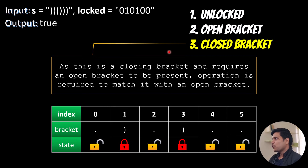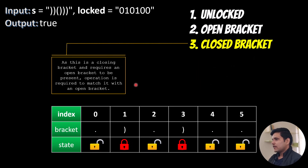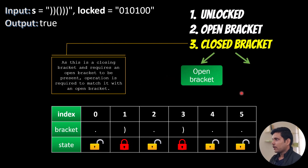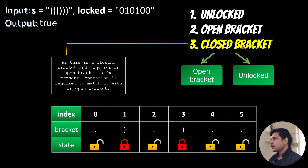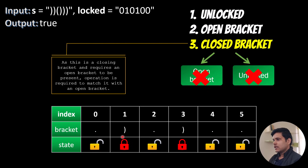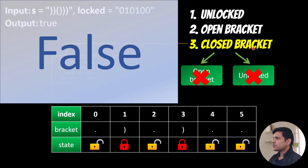Our whole attention should be on the closed bracket. Any closed bracket can be matched either via a locked open bracket or via an unlocked bracket, since an unlocked bracket can act as either open or closed. If we find no open or unlocked bracket before a closed bracket - for example, if a closed bracket is at index 0 - there's nothing to balance it with, so we return false.